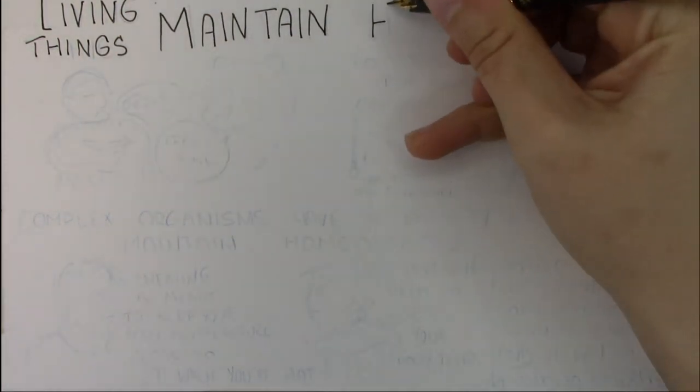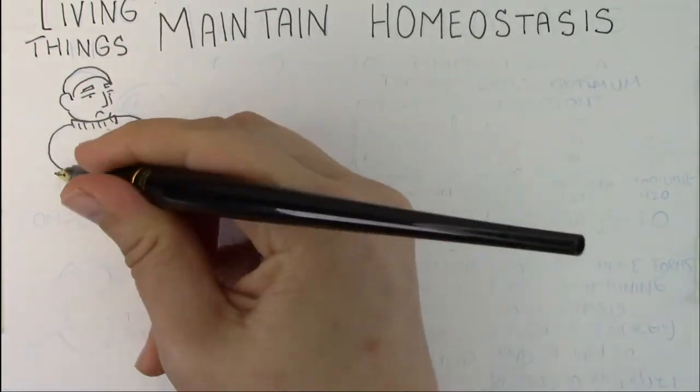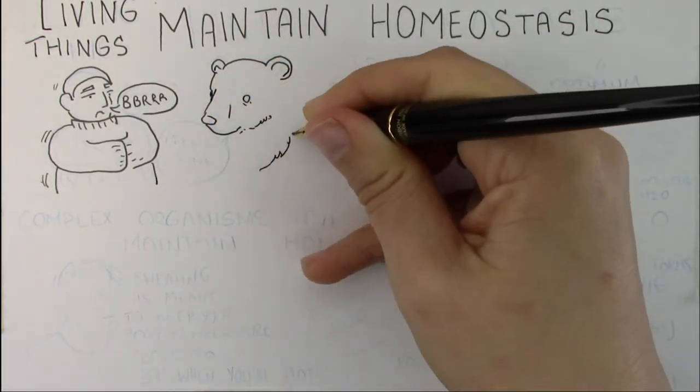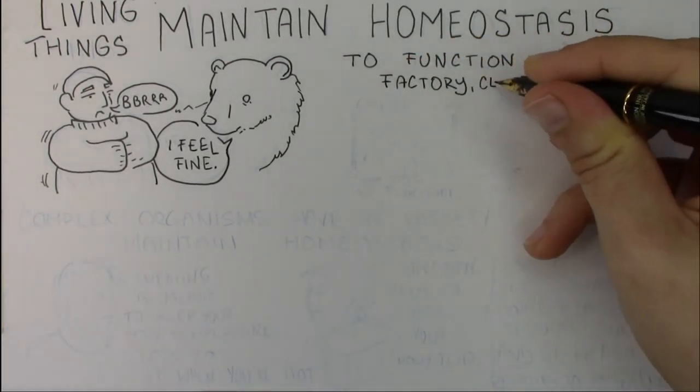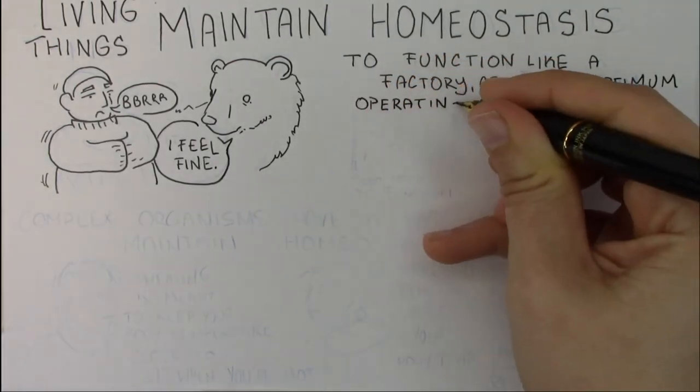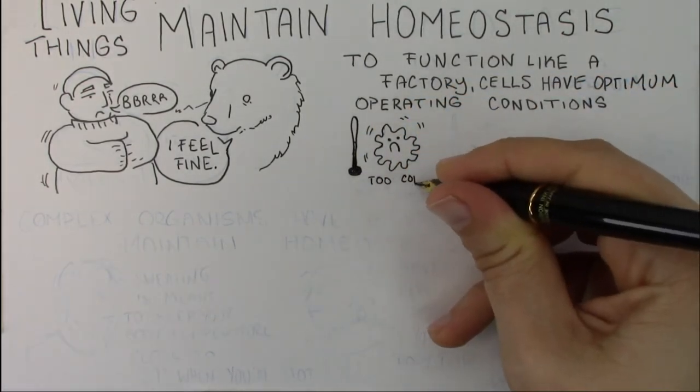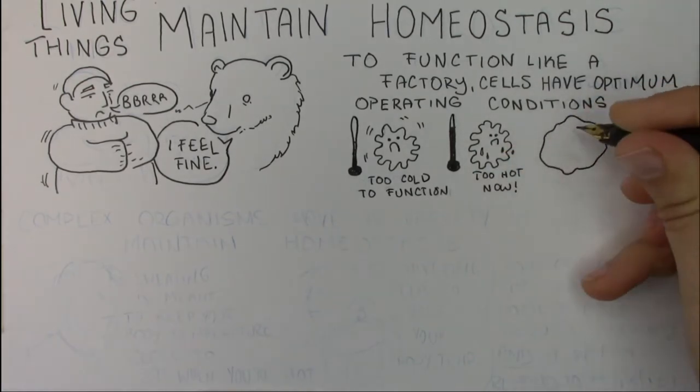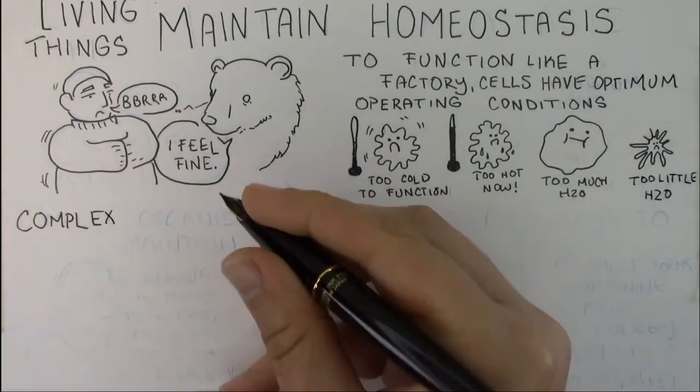Now, the only way your cells are going to be able to carry out those thousands of reactions that make up your metabolism is if they also maintain homeostasis. Homeostasis refers to the optimum operating conditions that your cells need to function properly. And this is going to differ based on what organism you are. For instance, a polar bear is going to be able to tolerate much higher temperatures than we could. So if your cells leave homeostasis, they don't function as well as they should, and this could eventually lead to the death of the organism. As a human, there are certain temperatures that we function best in. If we get too hot or too cold, we start to shut down and this is bad. And it isn't just temperature. There are other conditions that have to be maintained. The amount of water within your cells, the amount of salt, the pressure that you're at. This is going to differ based on what organism you are and how adapted you are to your environment.